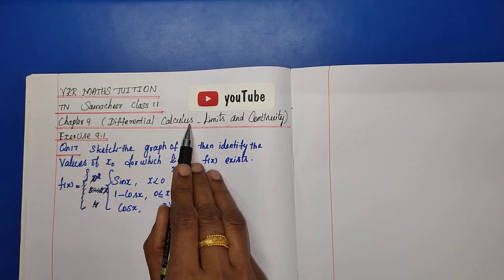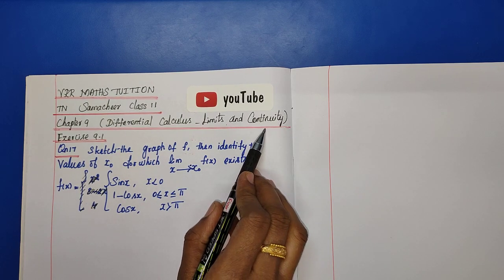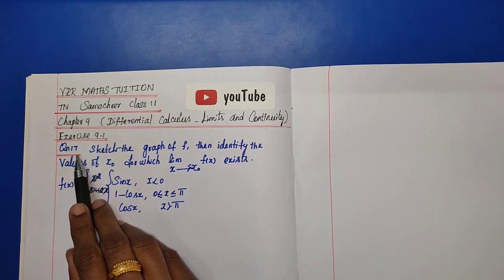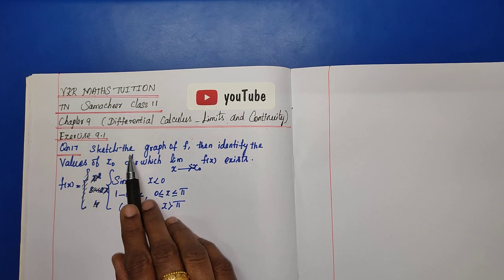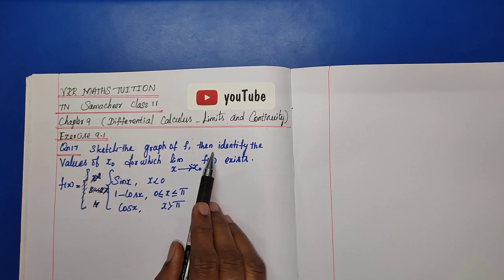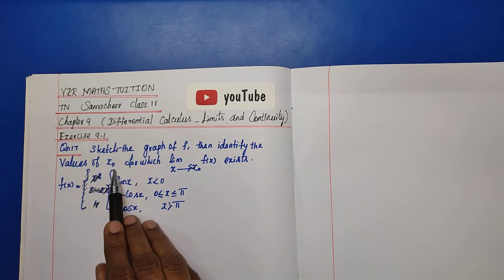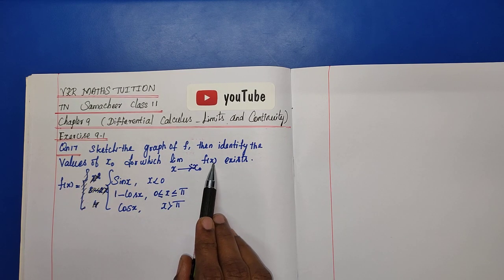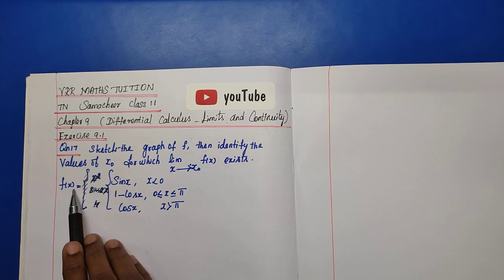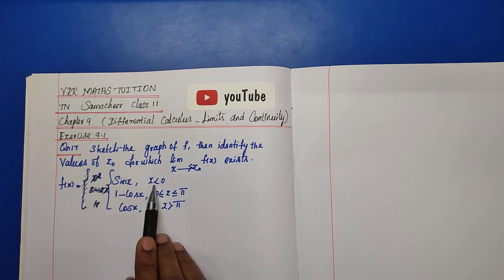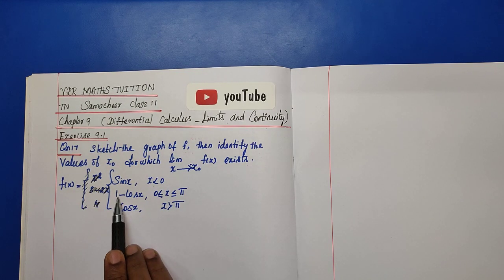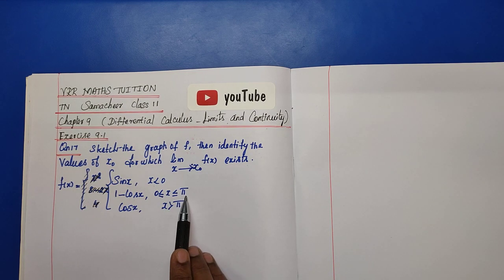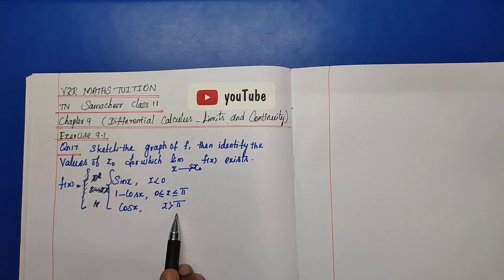Chapter 9, differential calculus: limits and continuity. Exercise 9.1, question 17: sketch the graph of f, then identify the values of x0 for which the limit as x tends to x0 of f(x) exists. The function f(x) is defined as: sin x for x less than 0; 1 minus cos x for 0 less than or equal to x less than or equal to pi; cos x for x greater than pi.